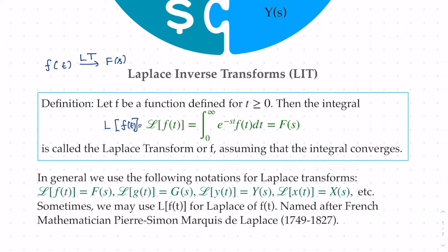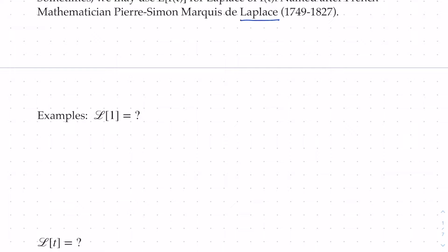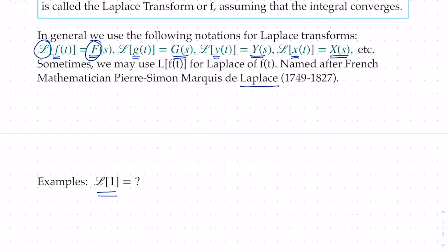In general, we use a capital letter for a transformed function: small f(t) gives capital F(s), small g gives capital G(s), small y(t) gives capital Y(s), small x(t) gives capital X(s). This is called the Laplace transform, named after the French mathematician Laplace. Now let's look at how we find the Laplace of some basic functions — starting with the Laplace of the function 1, using the definition.